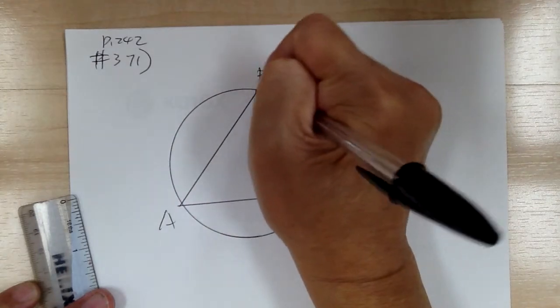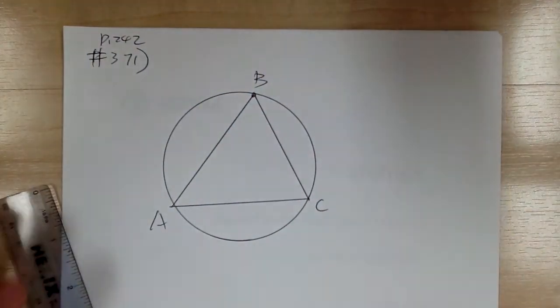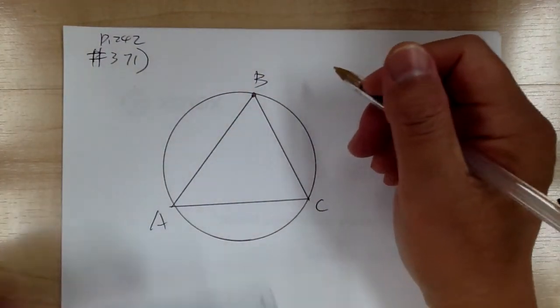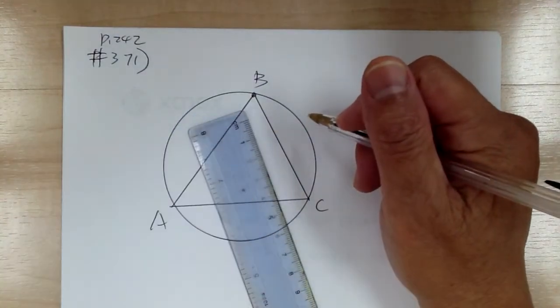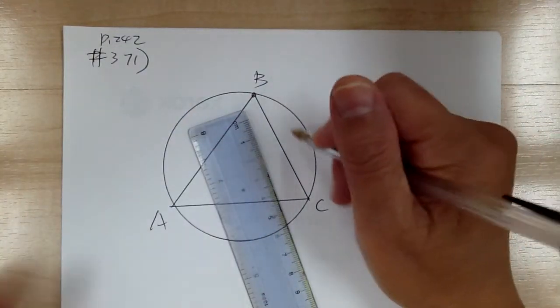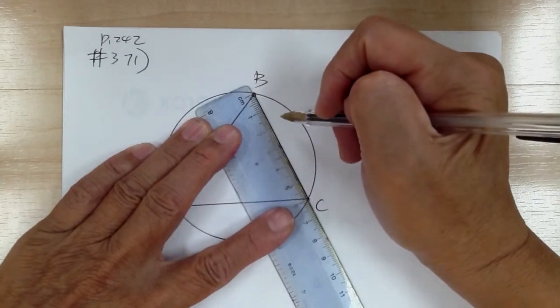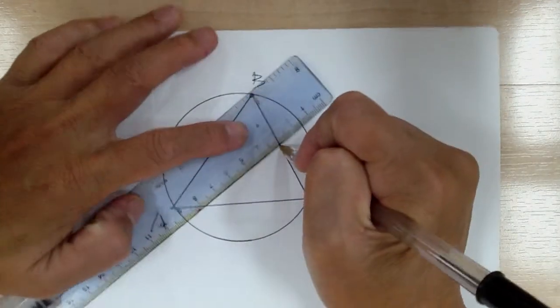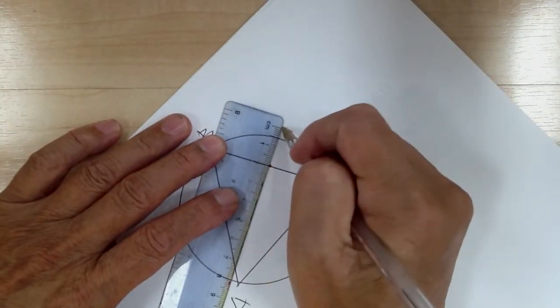So you've got A, B, C, and you're going to get the perpendicular bisectors.